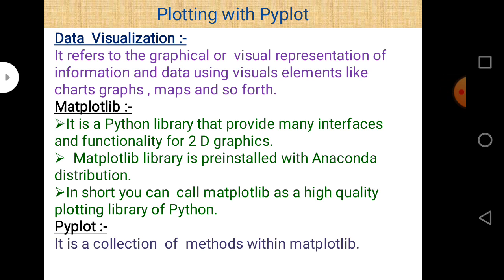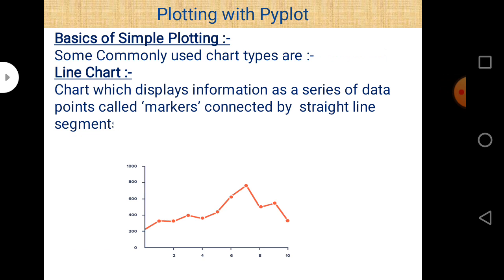If you want to draw different types of graphs such as line chart, bar chart, or scatter chart, just write import matplotlib.pyplot. Line charts are basically a collection of series of data points called markers, and these are connected by a straight line segment, as shown in the diagram.